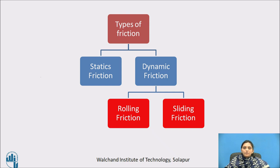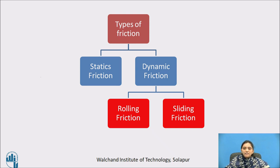The types of friction are static friction and dynamic friction. Dynamic friction is further classified into two types: rolling friction and sliding friction. In this session, we will focus on static friction.